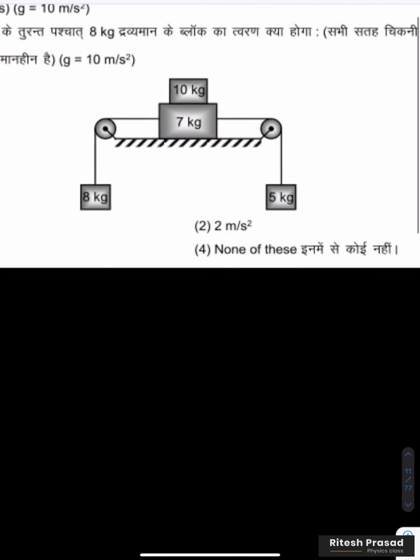The acceleration of 8 kg block just after system is released is, all surfaces are smooth, ideal pulley is massless. Given g equals 10 meter per second square. So here is no friction, so here is the diagram.